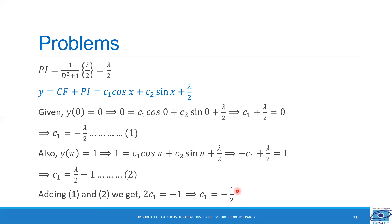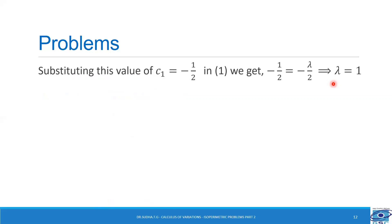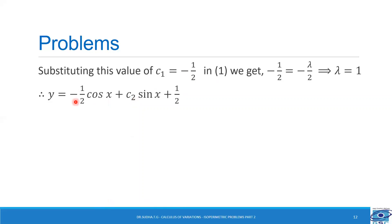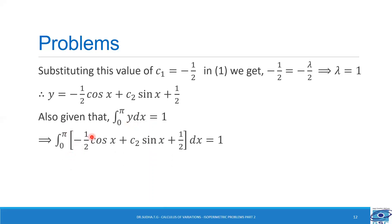Putting c1 equal to minus half into expression 1 gives lambda equal to 1. So the expression for y becomes minus half cos x plus c2 sin x plus 1/2. We have one more condition: integral 0 to pi of y dx equal to 1. Substituting for y gives integral 0 to pi of (minus half cos x plus c2 sin x plus 1/2) dx equal to 1.